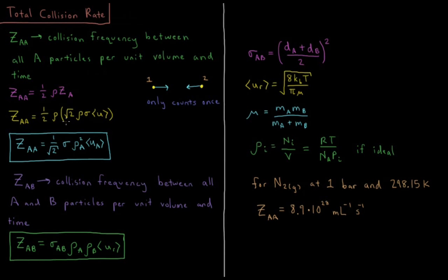Substituting in the value of the collision frequency for an individual particle from our previous video, we now have one-half times density times the square root of two times density times the cross-sectional area of our particle times the average velocity of that particle. So the total collision frequency between particles of the same gas is one over the square root of two — since square root of two over two equals one over square root of two — times the cross-sectional area times the density squared times the average velocity.